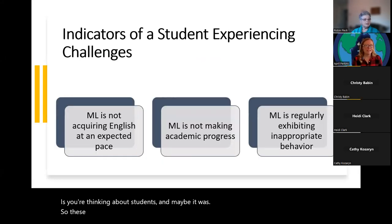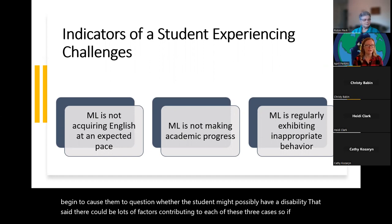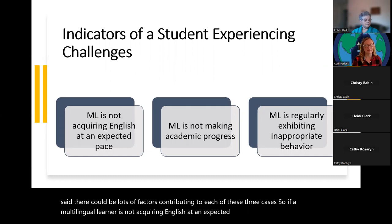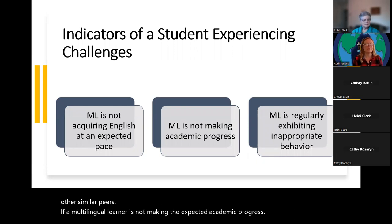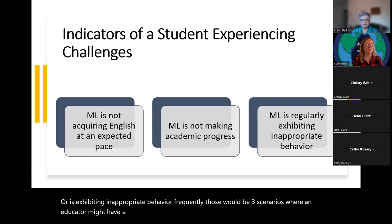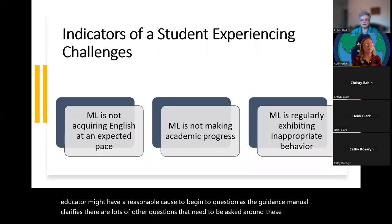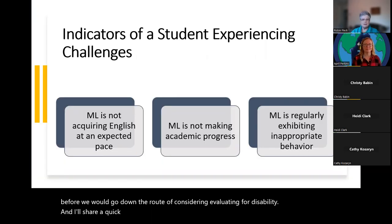There are indicators an educator might observe that raise the question of whether a student might possibly have a disability. If a multilingual learner is not acquiring English at an expected pace compared to similar peers, not making expected academic progress, or exhibiting inappropriate behavior frequently — those are three scenarios where an educator might have reasonable cause to begin to question. However, as the guidance manual clarifies, there are many other questions that need to be asked around these three scenarios before pursuing the route of evaluating for a disability.